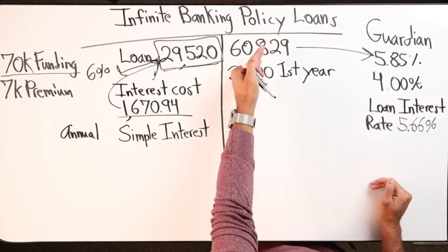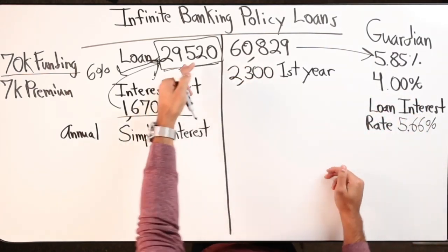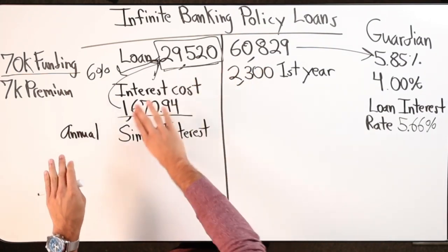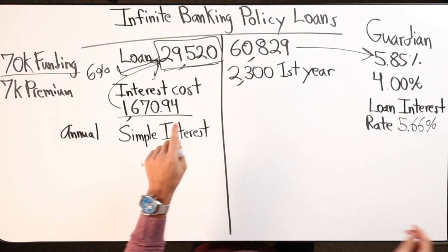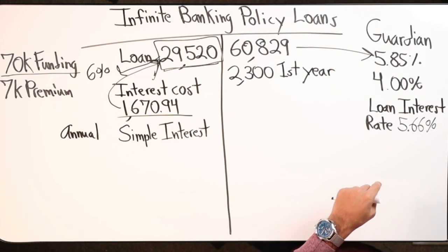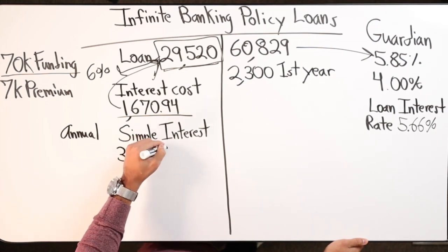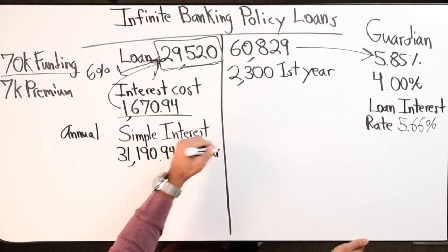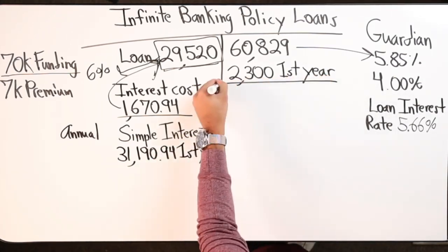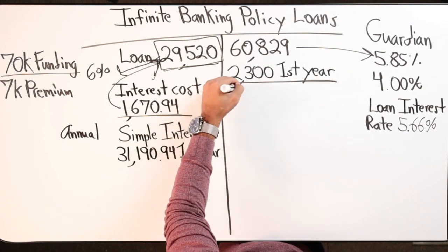Even though I took this money out, I'm being charged 5.66% but I'm also earning on all the money as if I never borrowed it. So let's say I left this outstanding, didn't pay anything - not even the interest on the debt. I'm at $29,520 plus $1,670.94, so now I'm at $31,190.94 in loans at the end of year one. But in my policy I'm at $60,829 plus $2,300, so now I'm at $63,129.